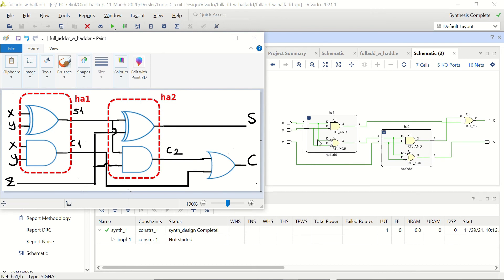Here we have our HA1 and in our design we have HA1. Actually it's a bit upside down. You see the AND gate above and the XOR gate below. And same in HA2 as well.